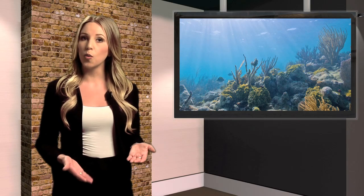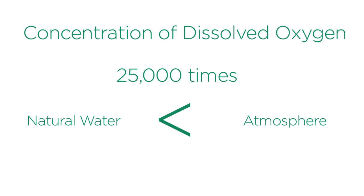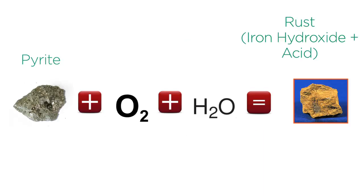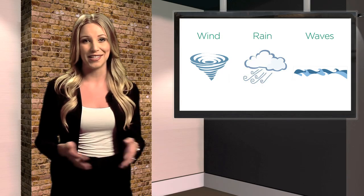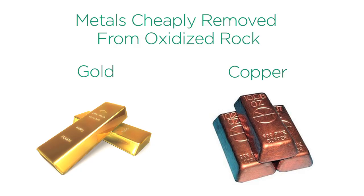Sulfides located below the water table or underwater will not weather significantly because the concentration of dissolved oxygen in natural waters is approximately 25,000 times lower than found in the atmosphere. Pyrite plus oxygen plus water equals rust (iron hydroxide) plus acid. Where sulfides have been exposed to weathering for a long time — in areas like Nevada or Chile — nature can remove all the sulfur for us. This kind of weathering is often helpful for gold and copper, as these metals can be more cheaply removed from oxidized rock now devoid of sulfur.